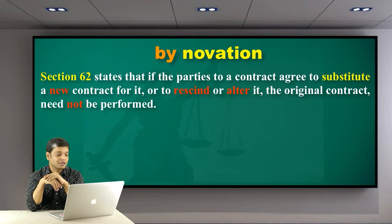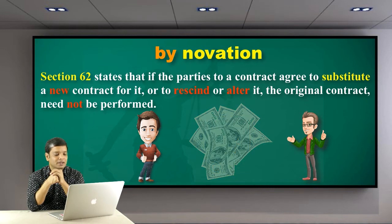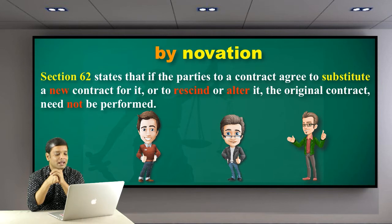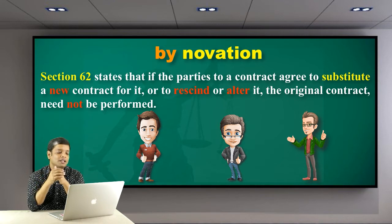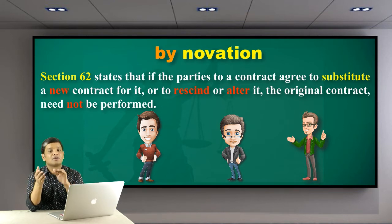This is also known as the Doctrine of Novation, as parties agree to substitute the existing contract with a new contract. For example, A owes money to B under a contract. It is agreed between A, B, and C that B shall thenceforth accept C as his debtor instead of A. The old debt of A to B is at an end and a new debt from C to B has been contracted. So if something new is substituted in place of the existing one, it is known as discharge of contract through novation.